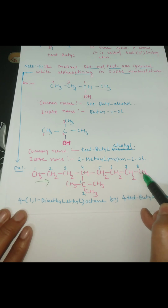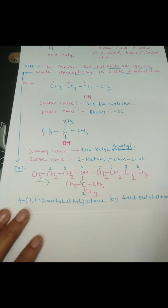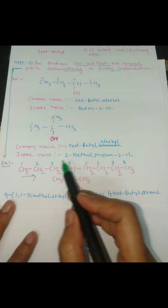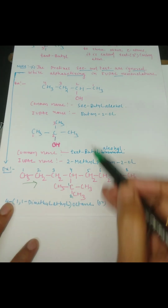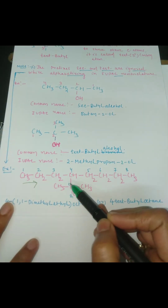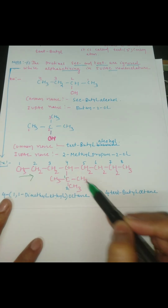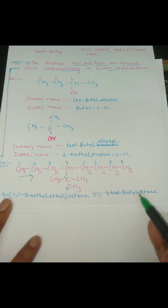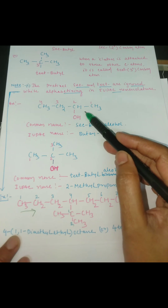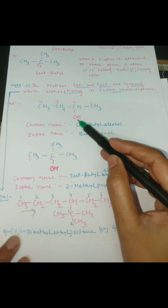Now, in total how many carbon atoms are there in the word root? Eight carbon atoms — so eight means the word root is octane. This group here is your tertiary butyl group. So you can also write the name as 4-(tert-butyl)octane.